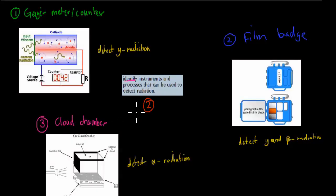And we have the second point, which is the second video, is identify instruments and processes that can be used to detect radiation. We said we have the Geiger counter or Geiger meter, which detects gamma radiation. We have the cloud chamber, which helps detect alpha radiation. And we have the film badge, which helps detect beta and gamma radiation. It says identify, so all you need to know is you need to know these names of these different instruments. And if you want to know how they work, the video itself covers as well how they work. So number two covers that.